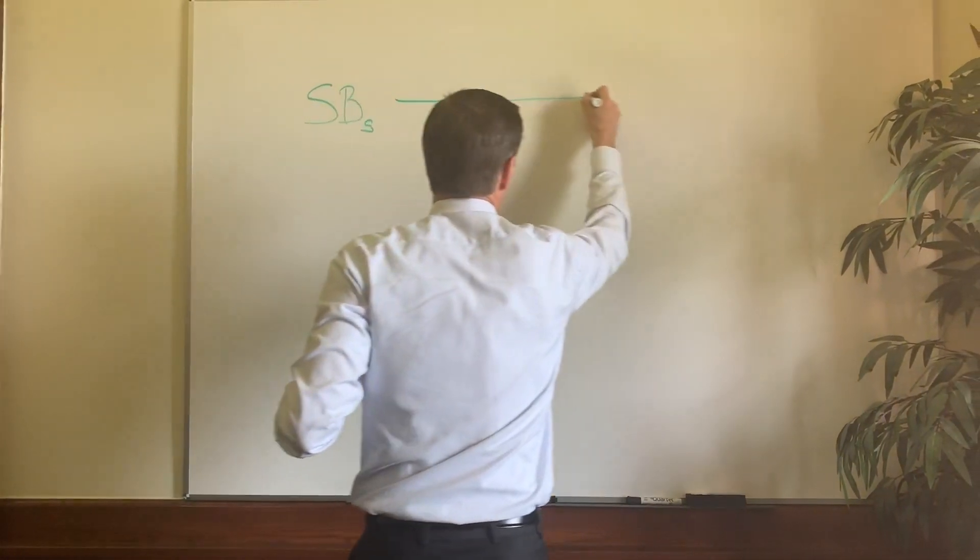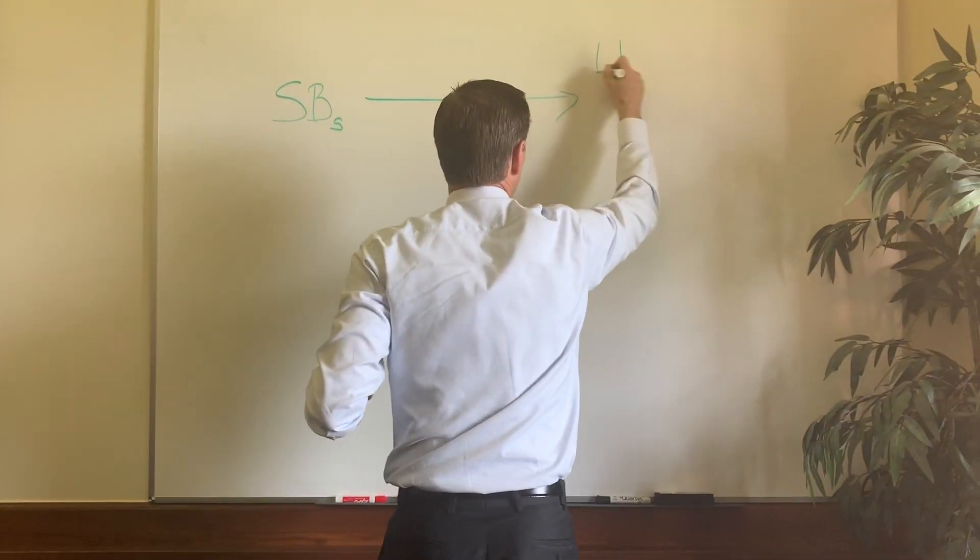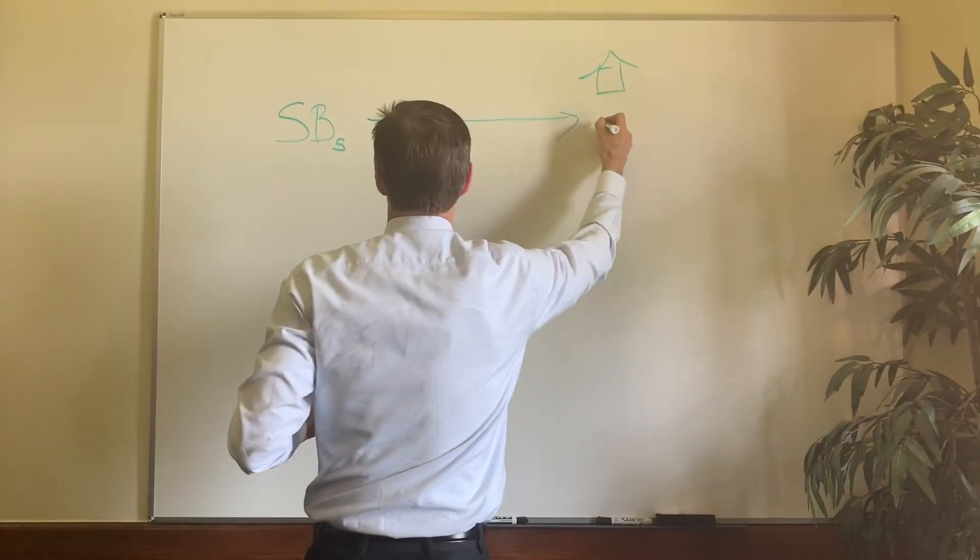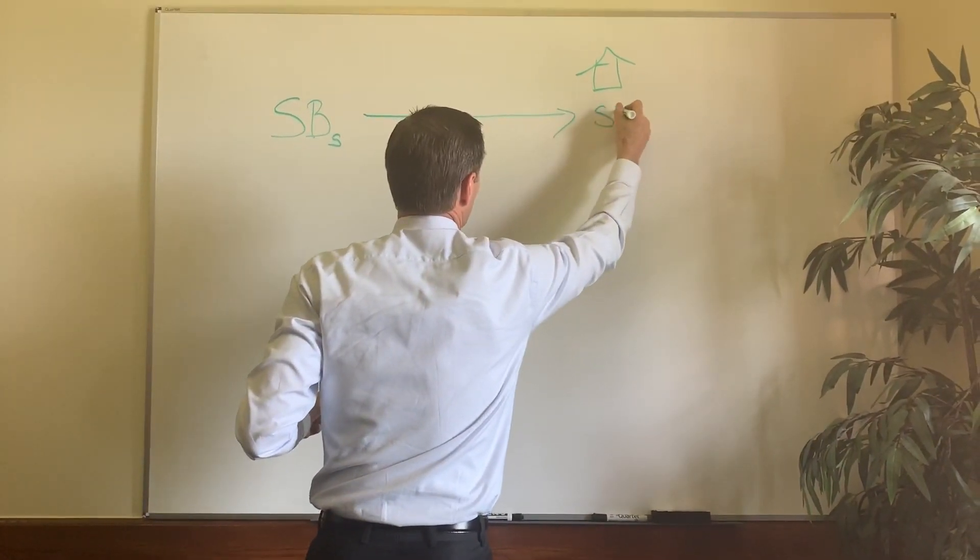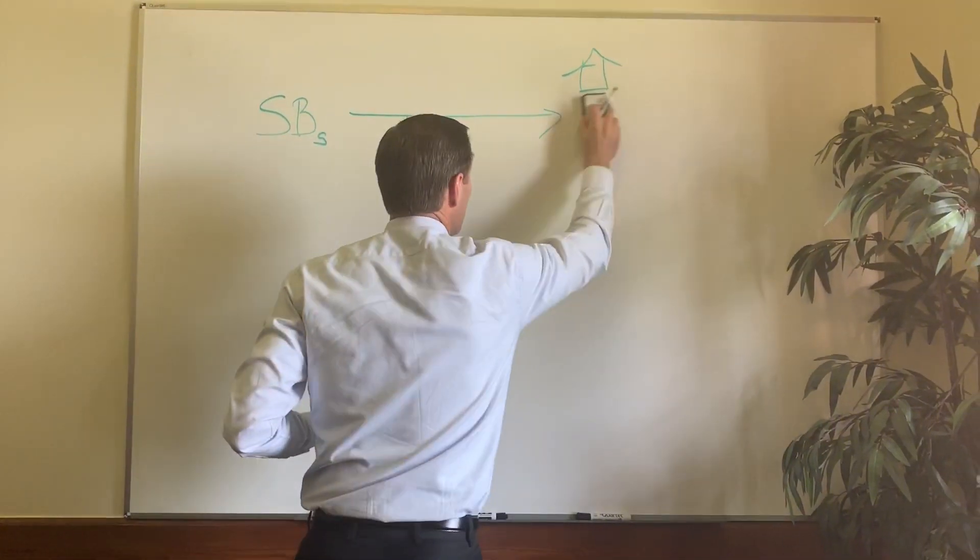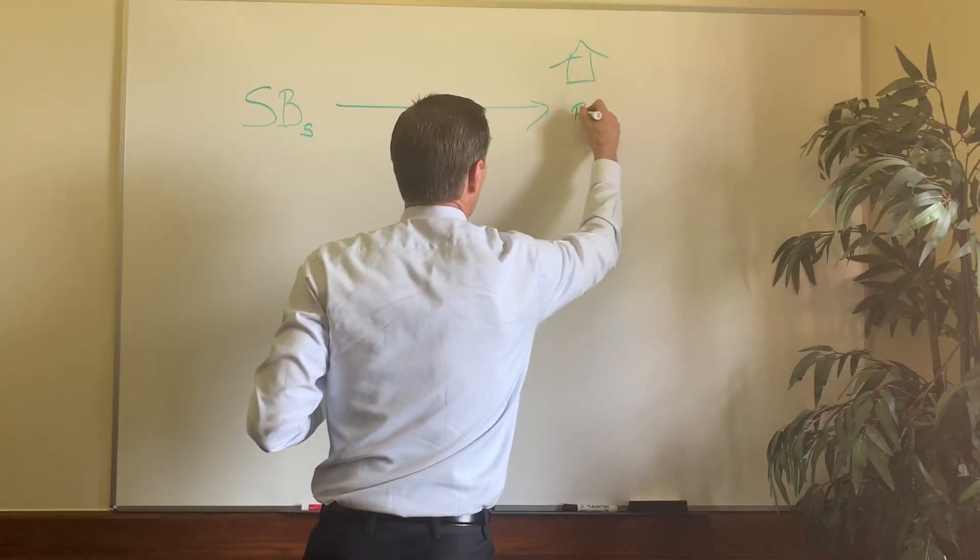It then goes over to the House. It's easier to draw the House than it is the Senate. Over there, I'm going to call it SB-Y yet. This is very complex stuff. It's got to go over to the House, and then it's got to be referred.